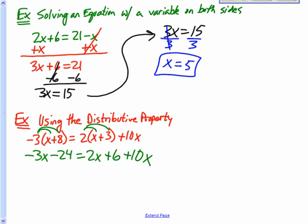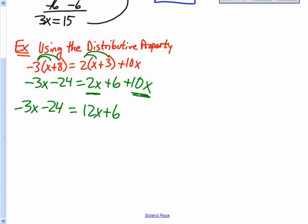Now we're going to combine like terms. You notice I have a 2x there, 10x there. So I've got 12x plus 6 on this right-hand side. Left-hand side stays the same. Now I've got variables on both sides. So I'm going to go ahead and combine those variables to one side. You notice I have a minus 3x. I kind of want my x's to be positive. So I'm going to take this one over to the right-hand side.